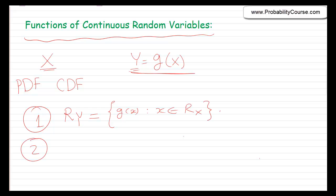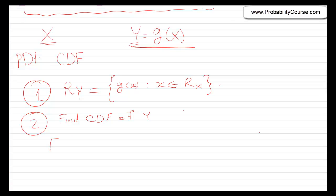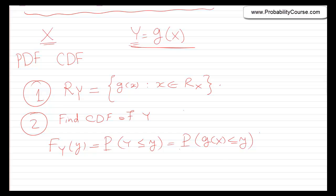The second step is to find the CDF of y. The CDF of y, by definition, F_Y of y is equal to the probability that Y is less than or equal to lowercase y. But y is just g of x, so this equals the probability that g of x is less than or equal to y. I should be able to find this probability because I already know the distribution of x — I converted a problem about y into a problem about x.